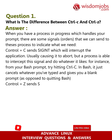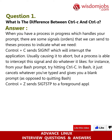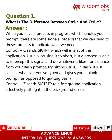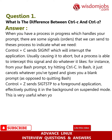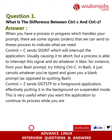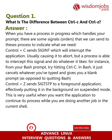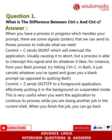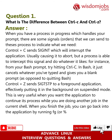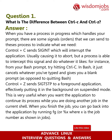CTRL+Z sends SIGTSTP to a foreground application, effectively putting it in the background in suspended mode. This is very useful when you want the application to continue its process while you are doing another job in the current shell. When you finish the job, you can go back into the application by running fg or %X, where X is the job number as shown in jobs.